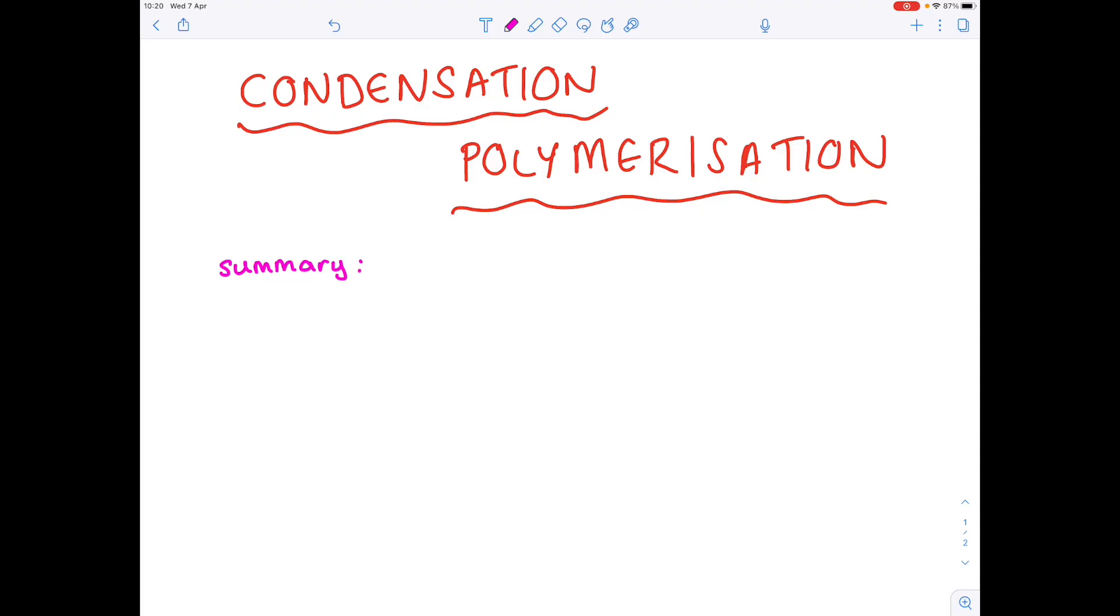So in condensation polymerization, first of all you need a dicarboxylic acid, and I'll tell you what one of those is shortly. You also need a diol, and that's going to produce a polyester and water as a by-product. This links nicely with me explaining what a condensation reaction is. It's a reaction where a small molecule is lost, e.g. water.